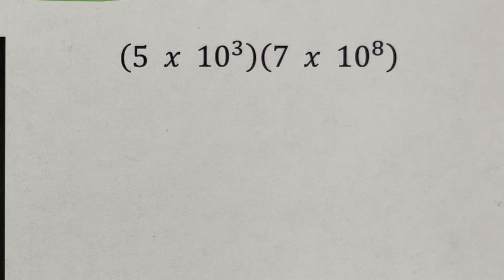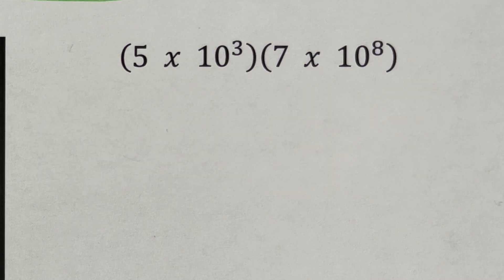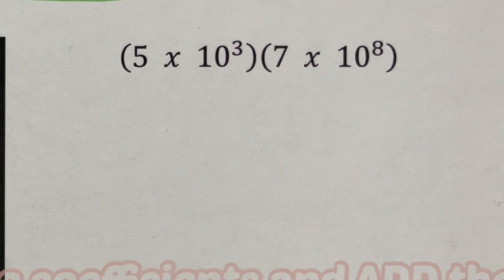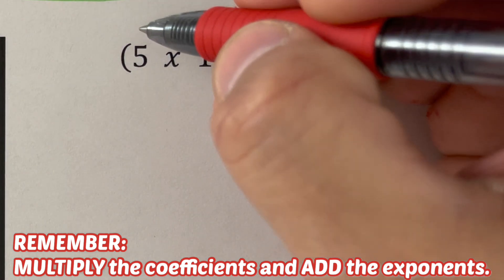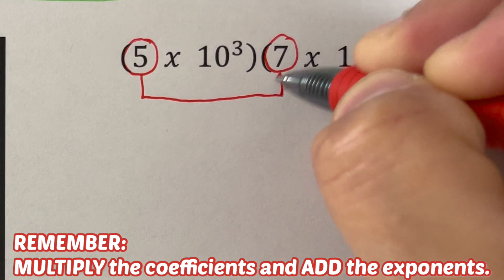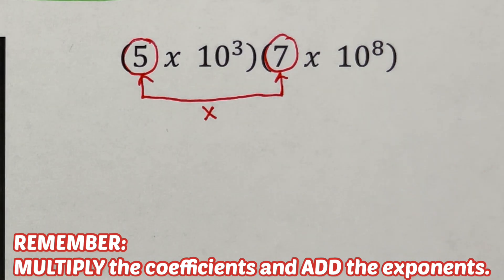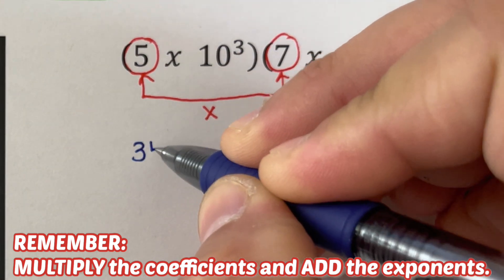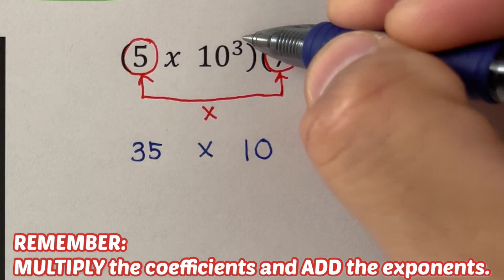At this time I'd encourage you to pause this video and try the next problem on your own. The basic rule is to multiply the coefficients and add the exponents. In this case, 5 and 7 shall be multiplied together — 5 times 7 is 35. We write the product as 35 times 10 to the power...